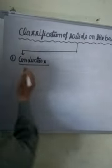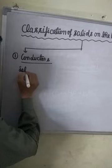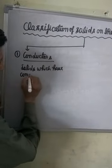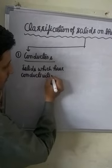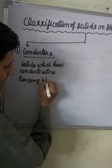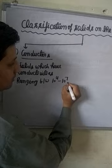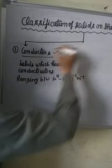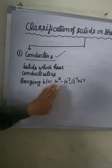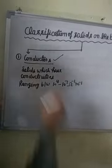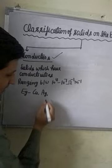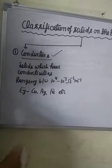For example, copper, silver, iron. Okay students, conductors — clear.